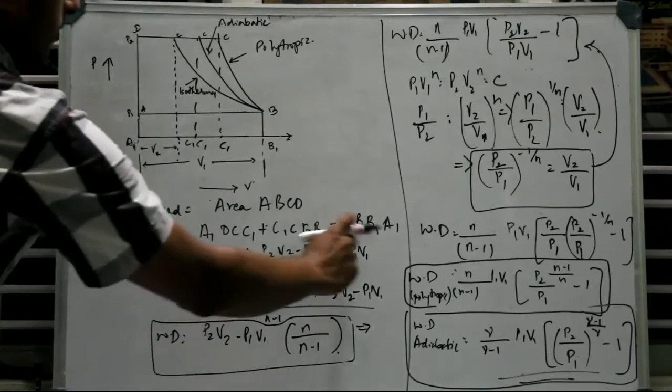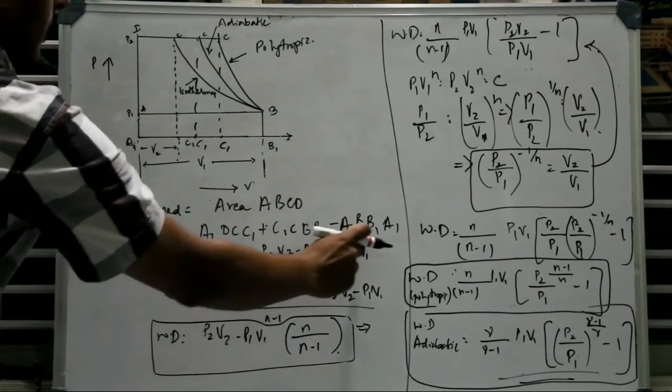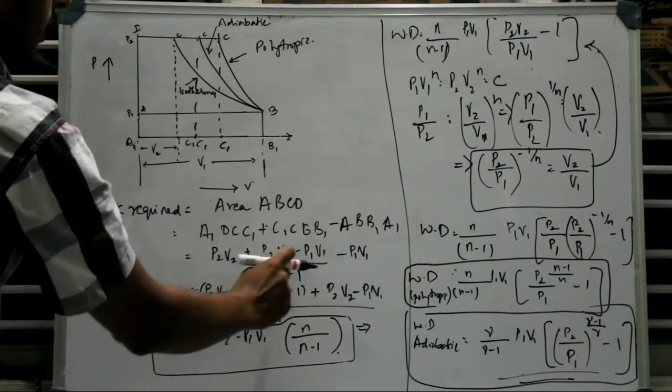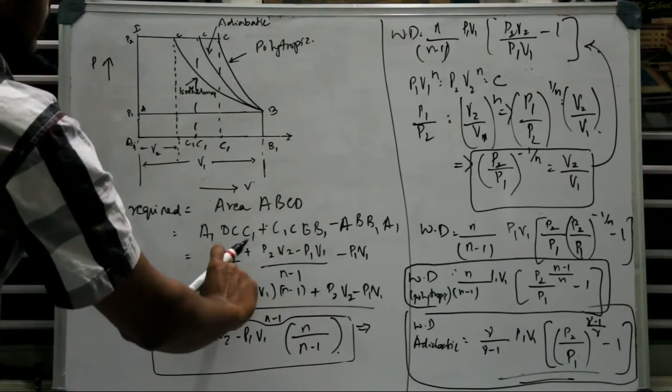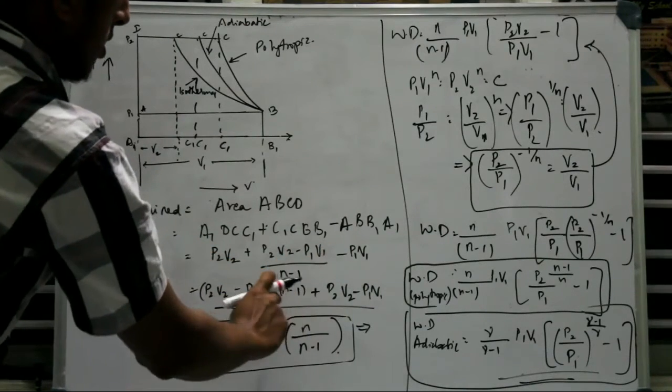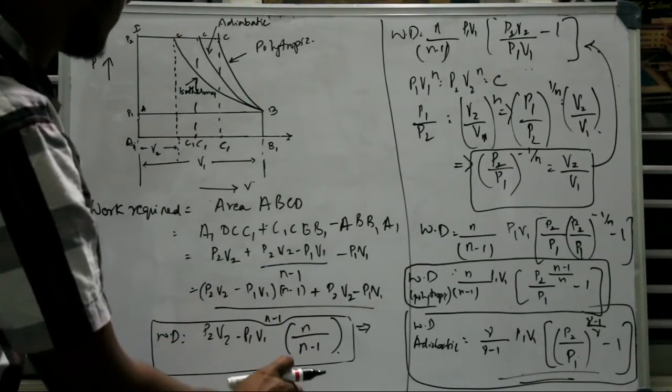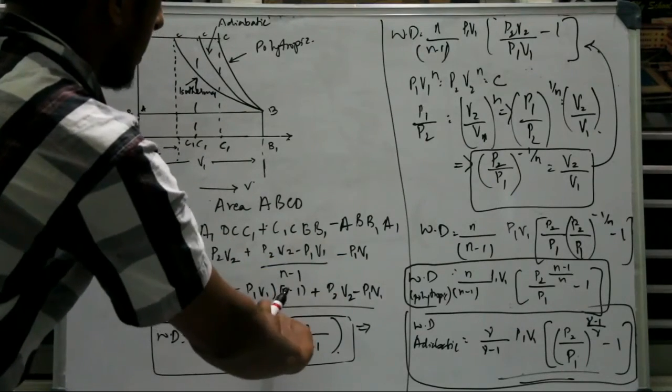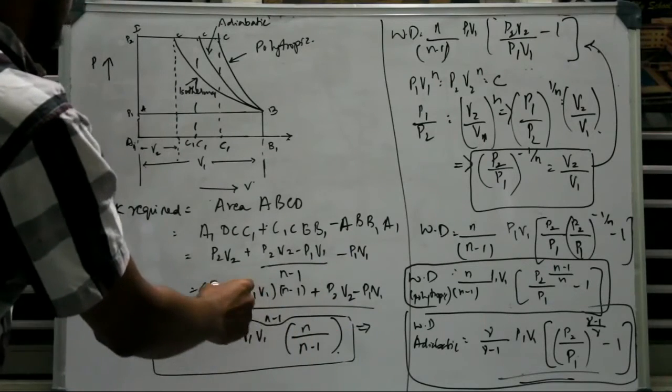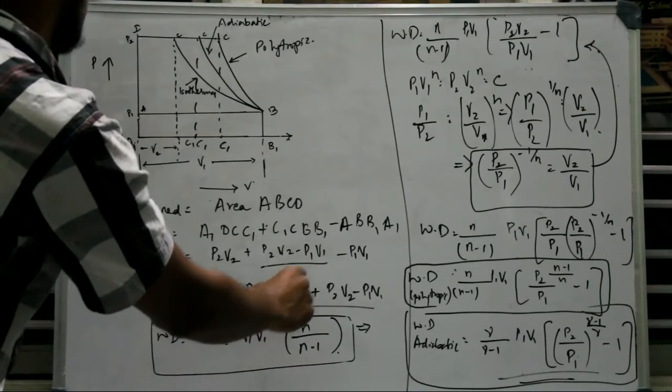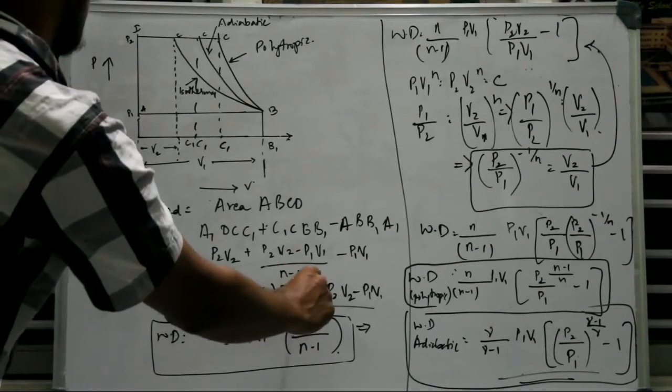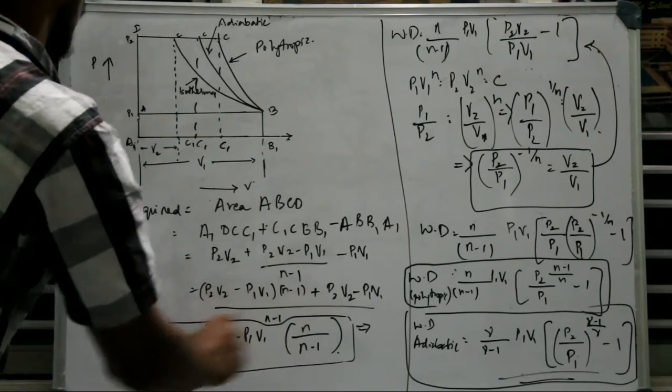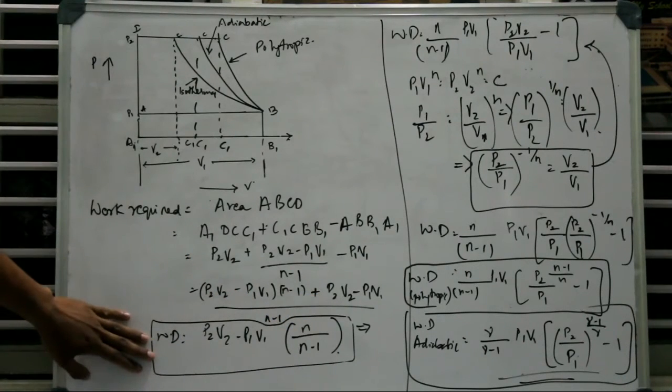And then when we take LCM, P1 minus P1 V1 we write it here and take LCM. We get P2 V2 minus P1 V1 into N minus 1 plus P2 V2 minus P1 V1 divided by N minus 1. And then by canceling we get P2 V2 minus P1 V1 into N minus 1 times N divided by N minus 1. So this is the general expression that we get.